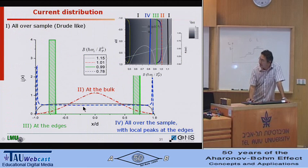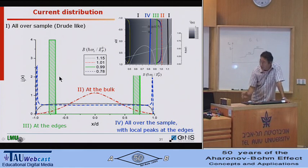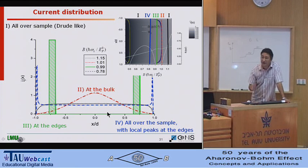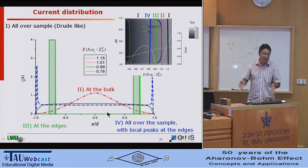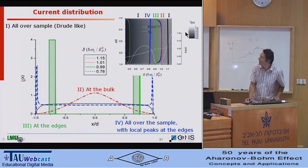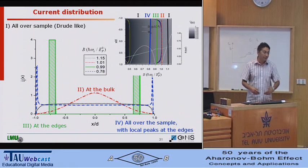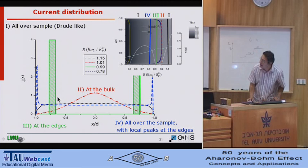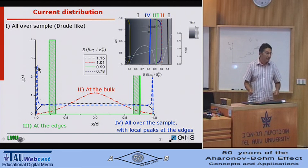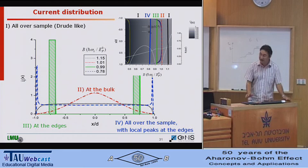This is how the current distribution looks. Out of plateau, the current is metal-like — it's the Drude model. When you enter the plateau, all the current is flowing in the bulk, like a localization picture. At the lower part of the plateau, the current is confined to the edges, to the incompressible strips. Going out of the plateau, you have still some spikes at the edges, and if you are really putting some non-equilibrium current there, you can carry current and do all these beautiful experiments.